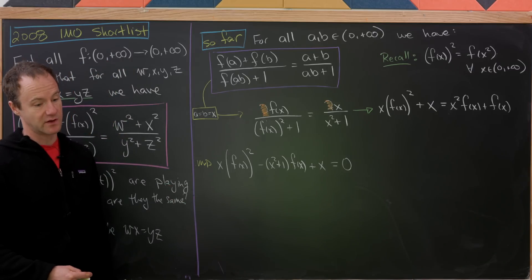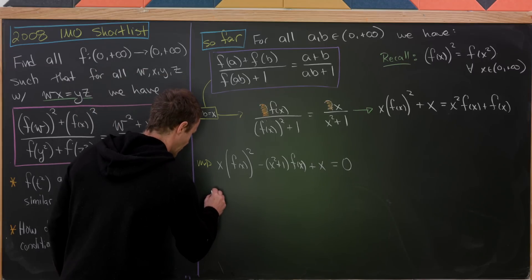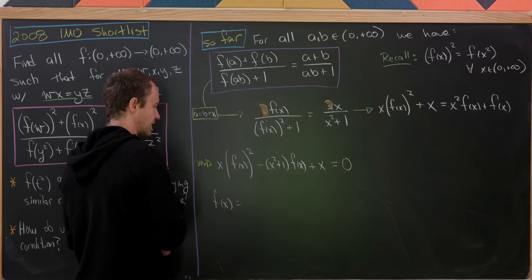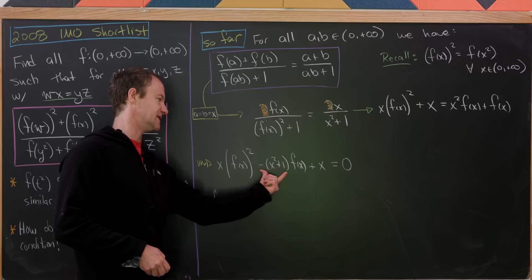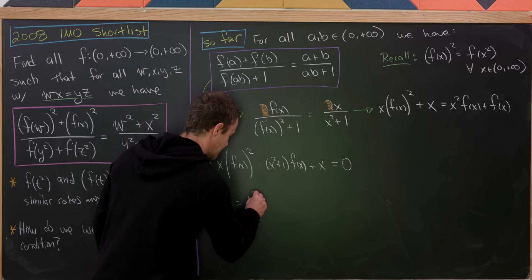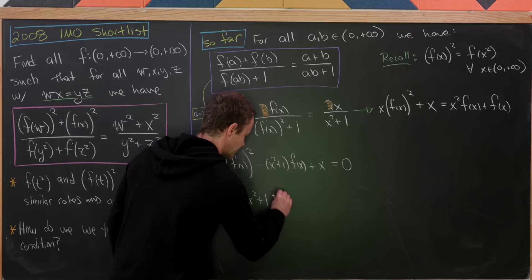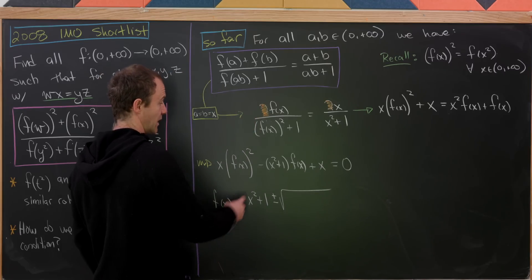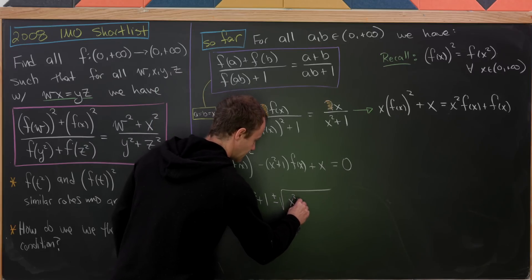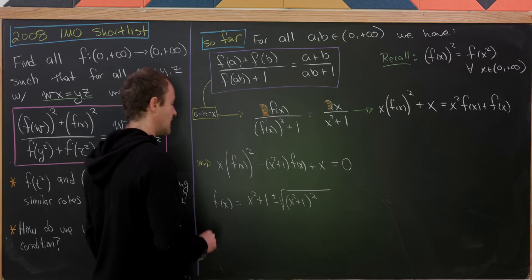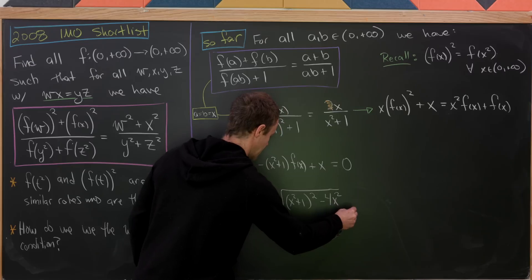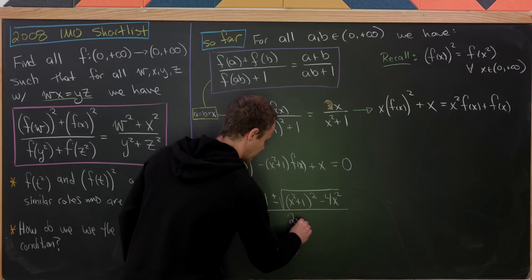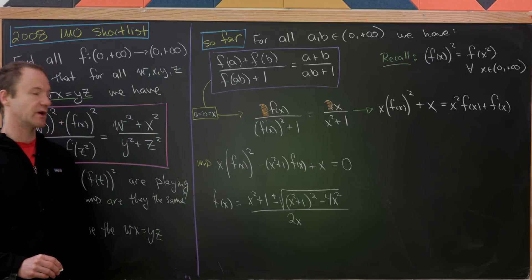But now we can use the quadratic formula on this. And if we use the quadratic formula, what will we have? So we'll have f(x) equals, well, recall the quadratic formula is negative b plus or minus the square root of all of that stuff. So our b term here is this negative (x² plus 1). So that means negative b will be x² plus 1. And then we have plus or minus the square root of, well, it's b². So that's going to be (x² plus 1)² minus 4 times a times c. So that's going to be minus 4x². And then all over 2a. So that's all over 2x.